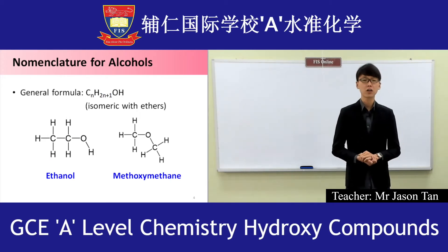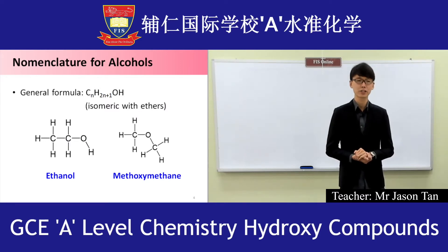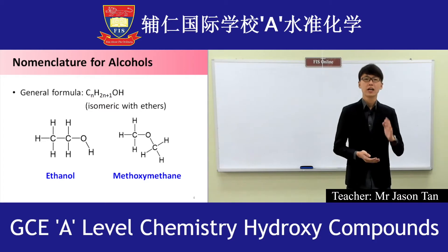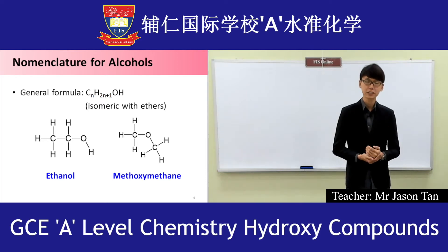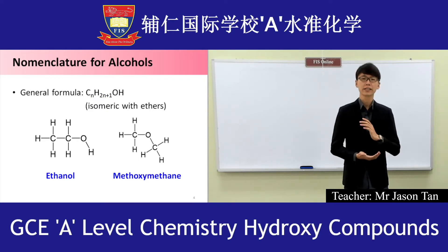The general formula of monohydric alcohol is CₙH₂ₙ₊₁OH. An example will be ethanol. Ethanol has an isomer known as methoxyethane. They are isomers because they have the same number of carbon atoms, the same number of hydrogen atoms, and the same number of oxygen atoms. In short, they have the same molecular formula but different structural formula.